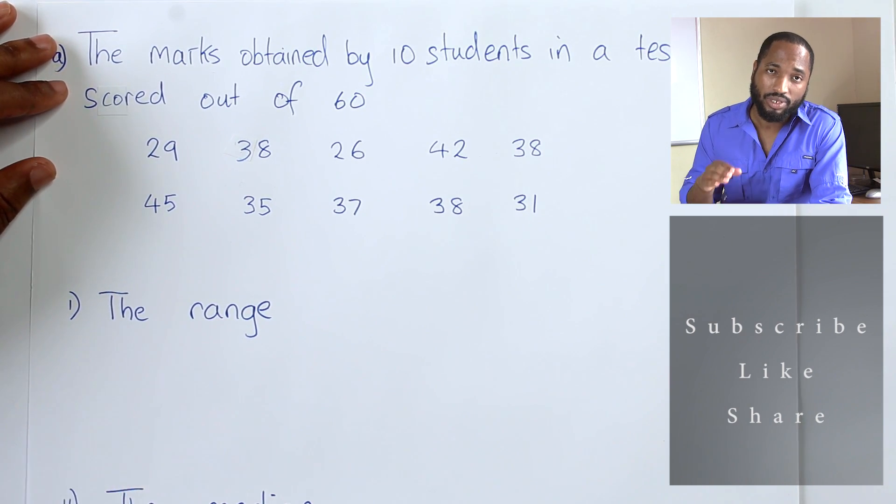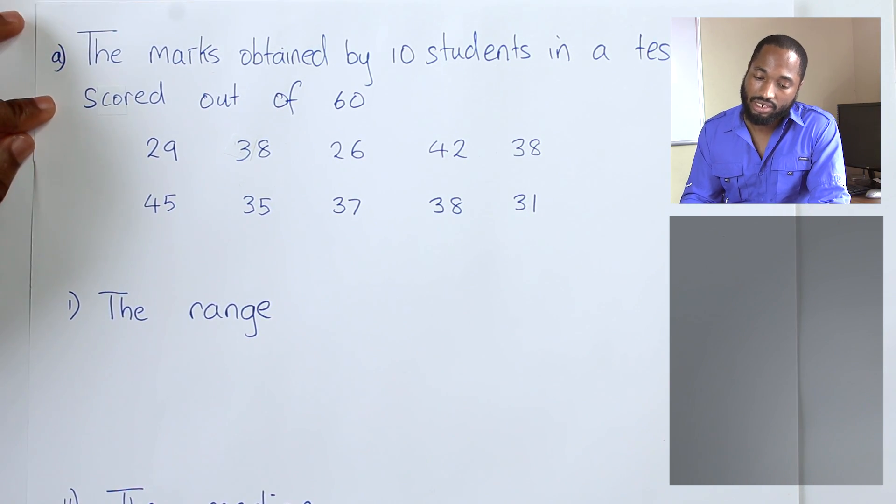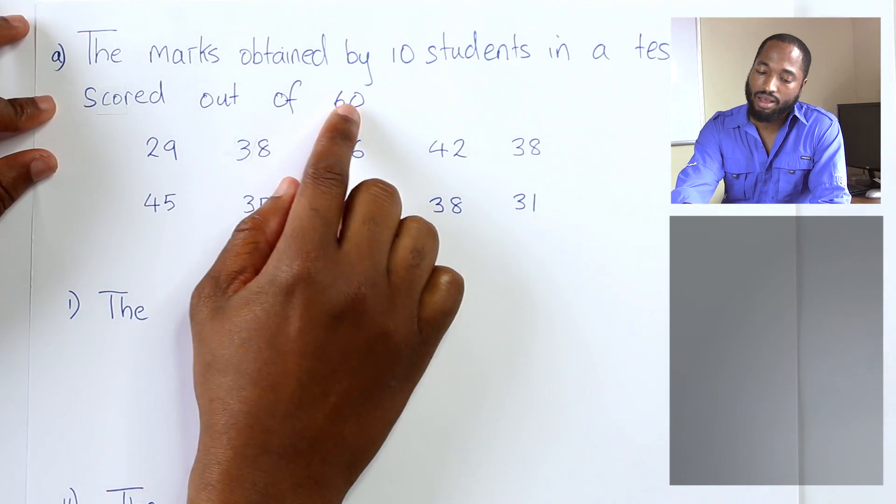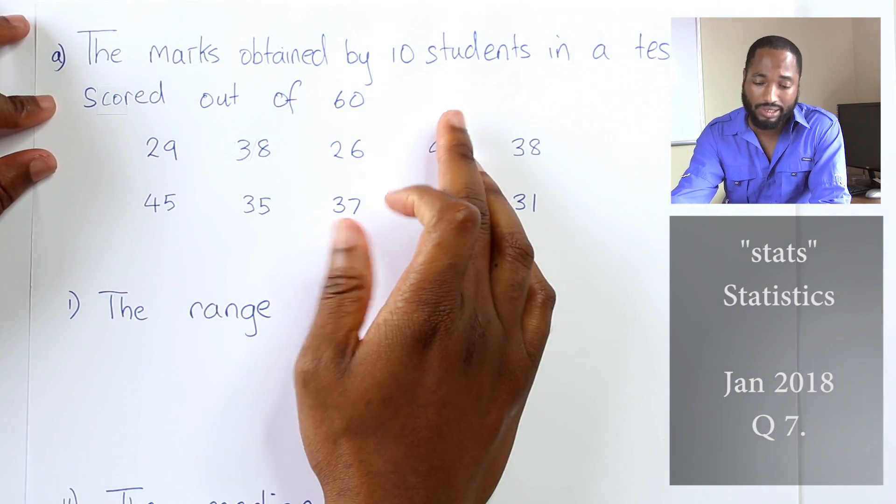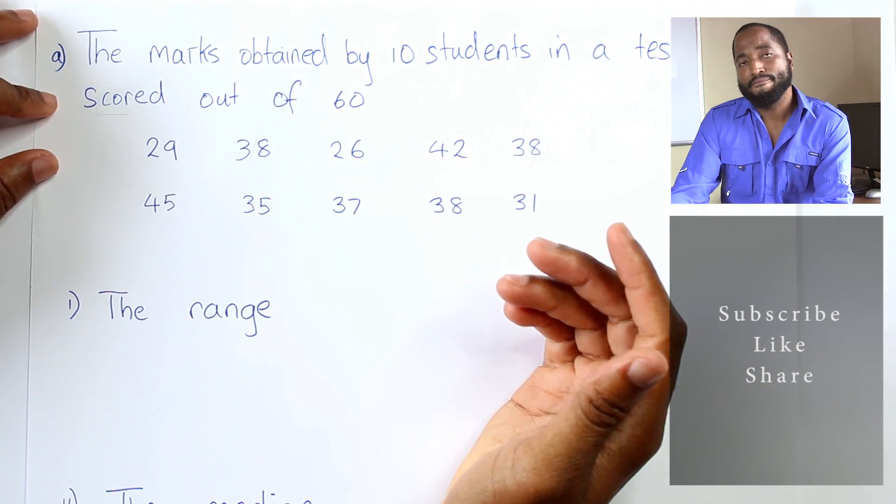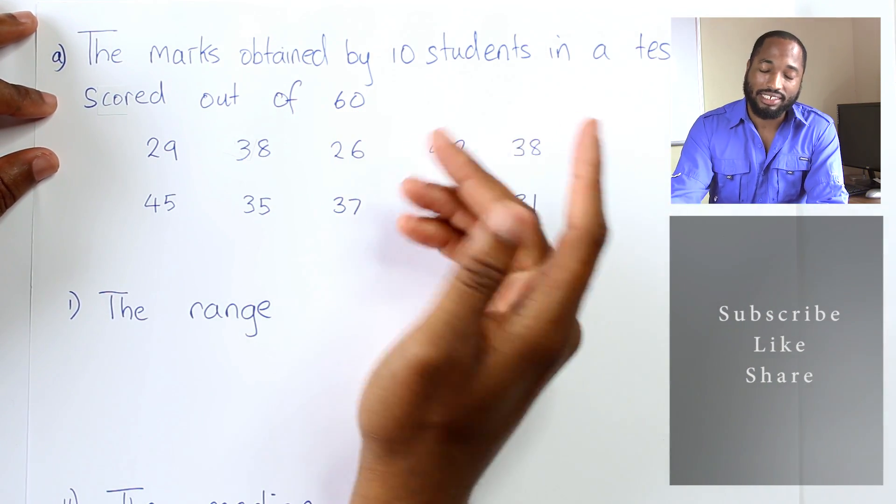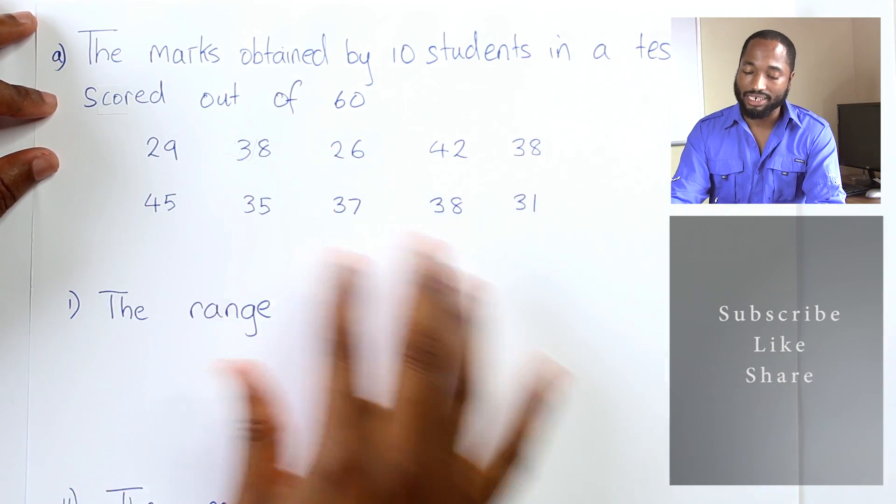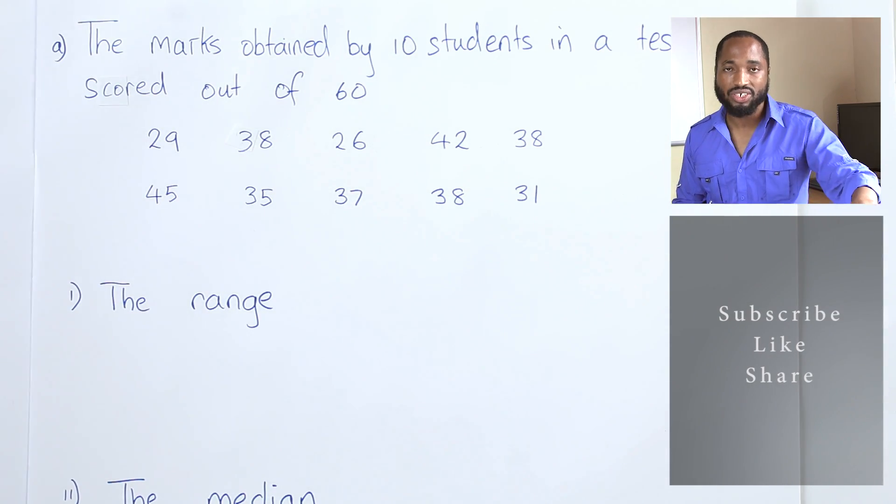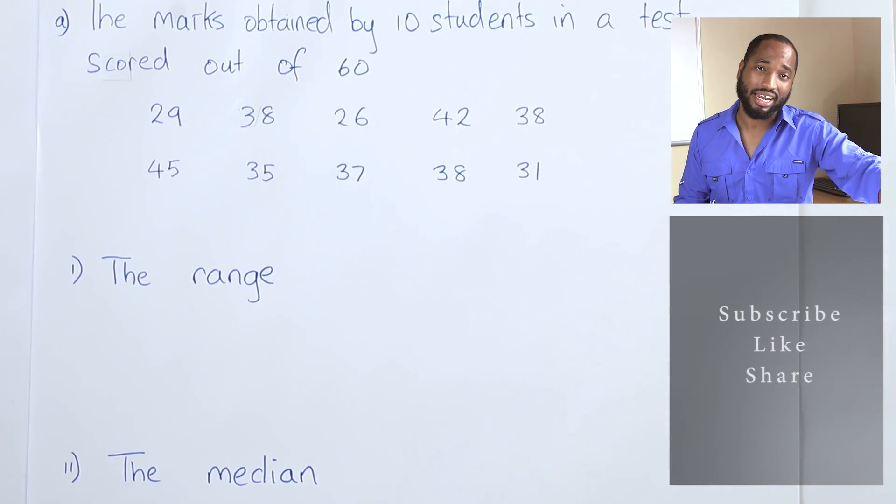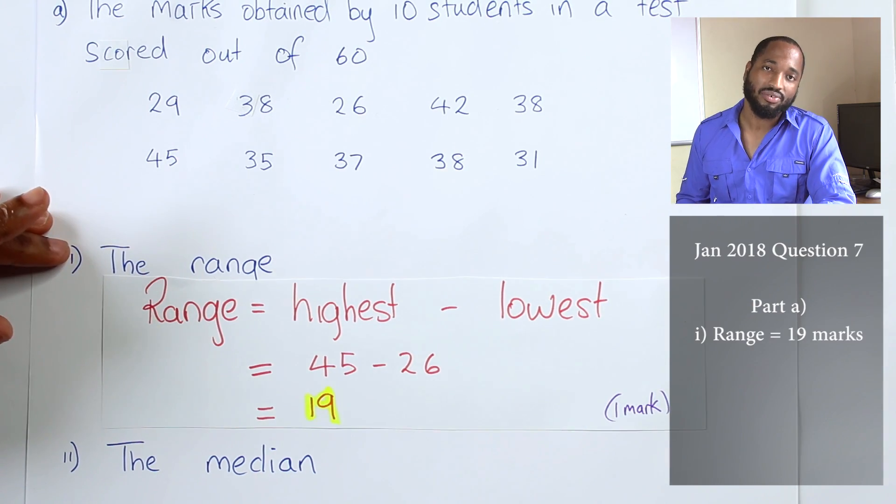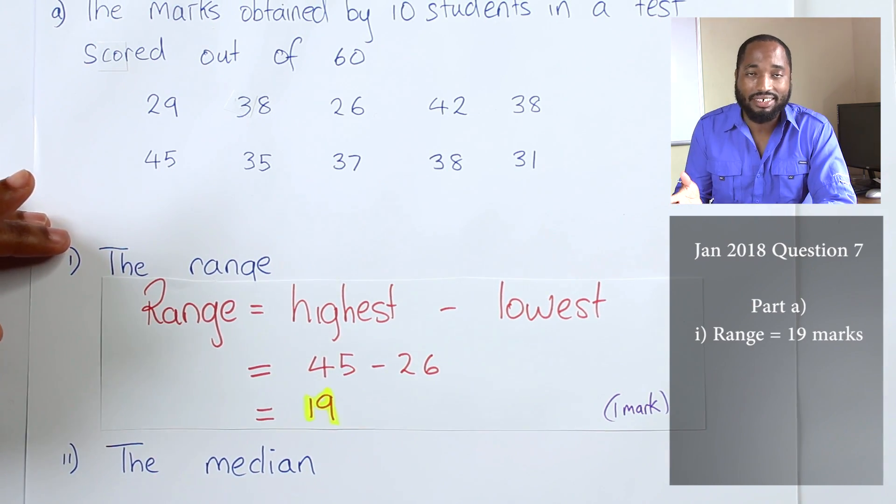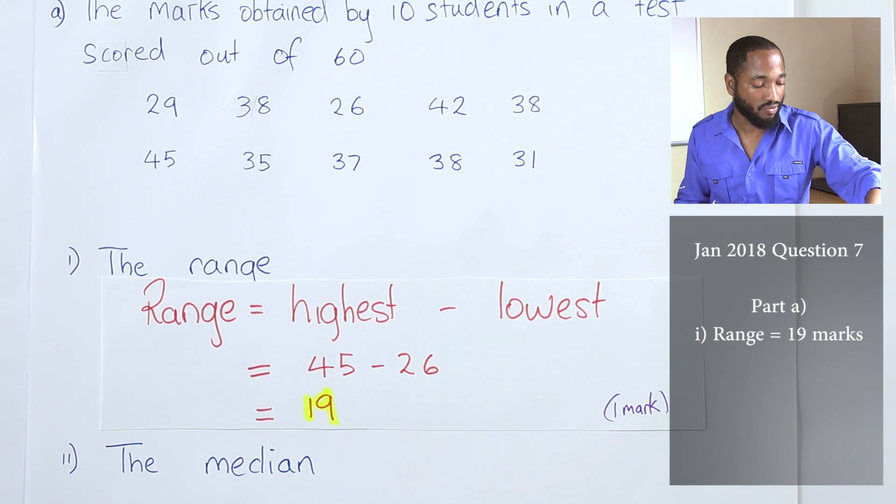In the January paper, question seven was stats. First thing asked us to do is find the range. They gave us some marks here obtained by about 10 students. Top mark possible is 60. The range is one of the easiest things they can ask you in statistics. The range is simply the highest value take away the lowest value. Look at the data, find the highest thing, find the lowest thing, take it away, move on.